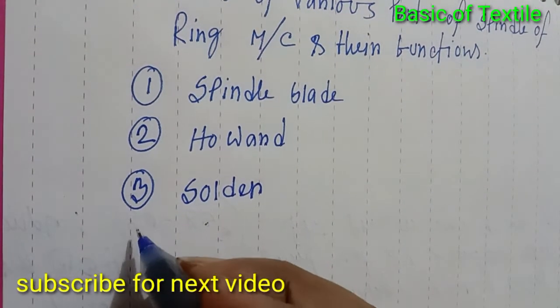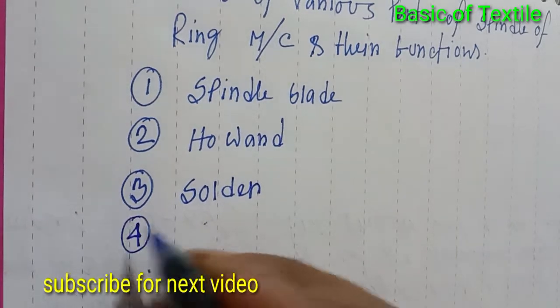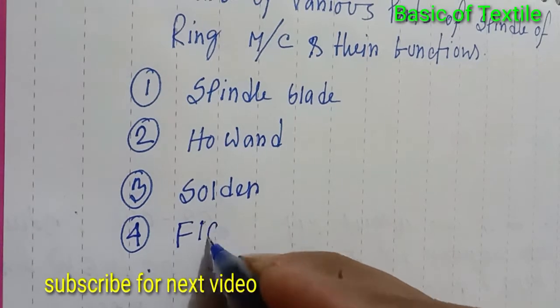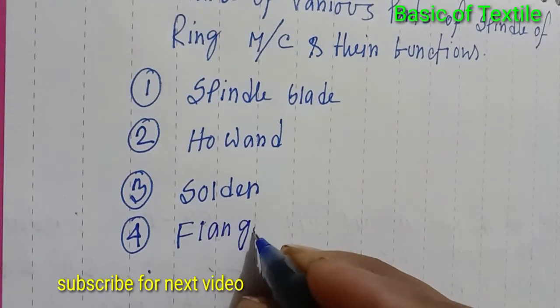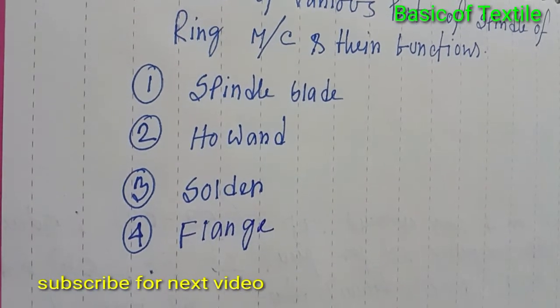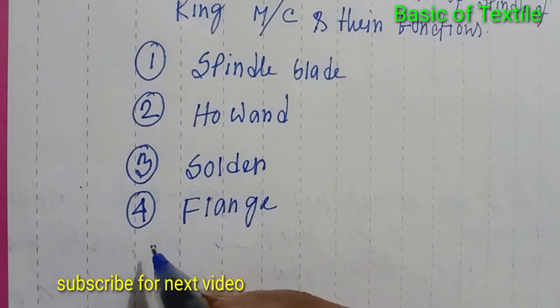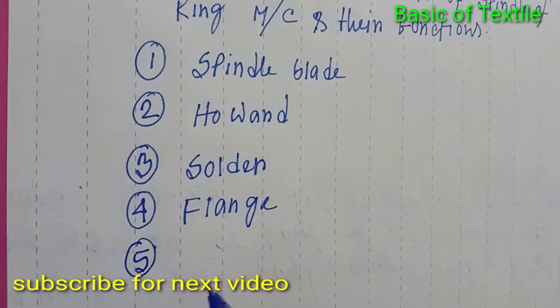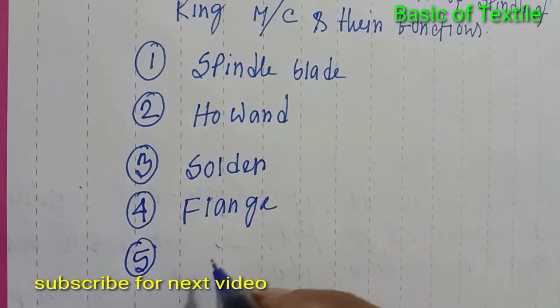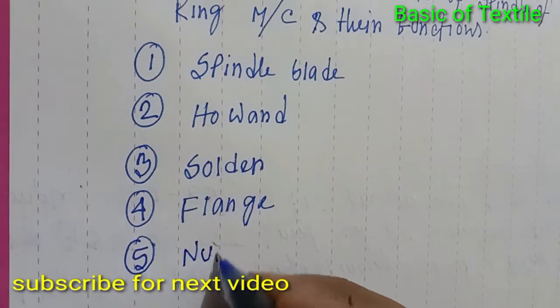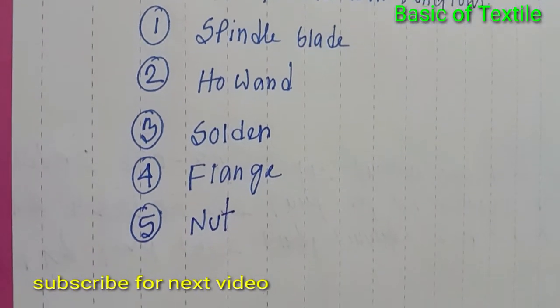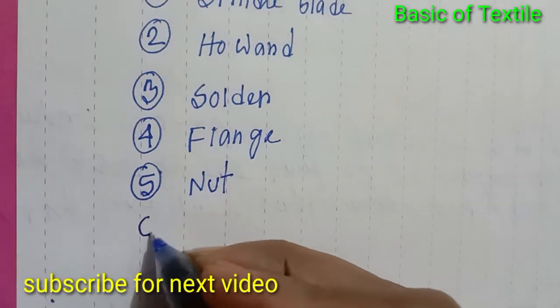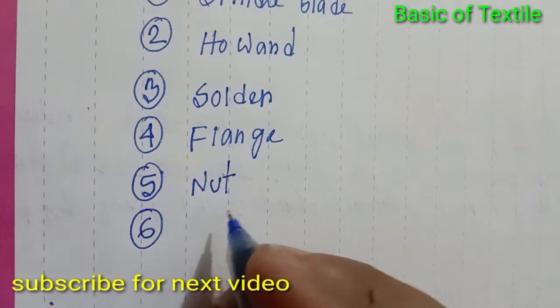Number four - flange, number five - lense, number six - nut or bolster.